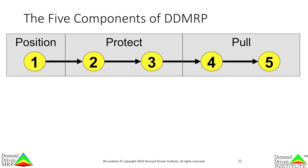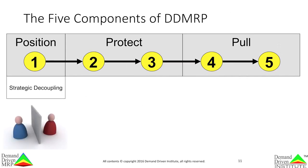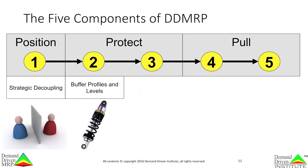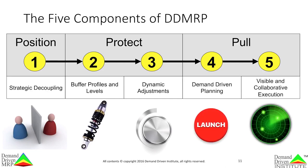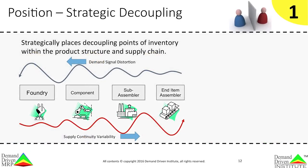DDMRP has five sequential components: strategic decoupling, buffer profiles and levels, dynamic adjustments, demand-driven planning, and finally visible and collaborative execution. Let's look at each one of these components in more detail.